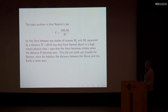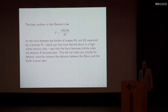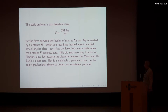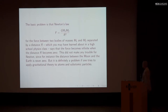This didn't cause any problem for Newton, since, for instance, the distance between the Moon and the Earth was never zero. He studied the Moon going around the Earth and didn't have to worry about what would happen if the distance was zero, because it never was. But if you try to apply gravitational theory to atoms and subatomic particles, you definitely do have trouble with the fact that the force law becomes infinite when the distance goes to zero. You definitely have to worry about the possibility that two electrons collide with each other, or an electron collides with the atomic nucleus.